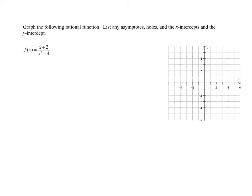Before I do anything else, I need to make sure my rational function is factored and reduced as much as possible. The numerator can't be factored any further, but the denominator x squared minus 4 is the difference of two squares. So the denominator factors as x plus 2 times x minus 2.